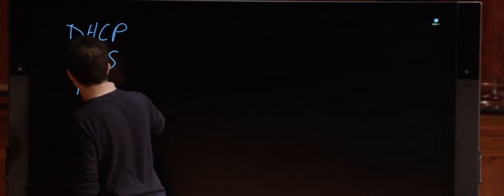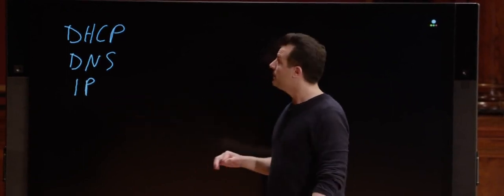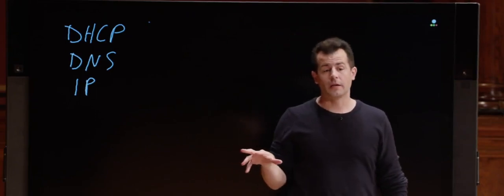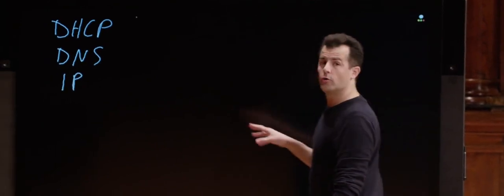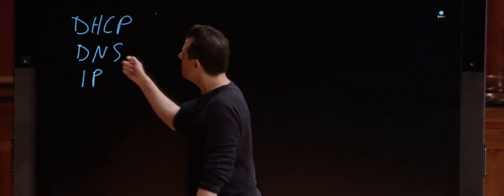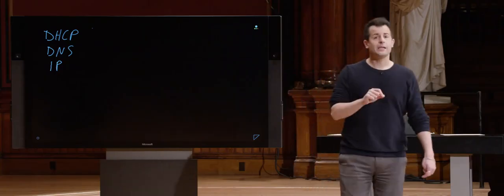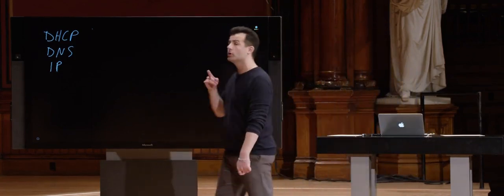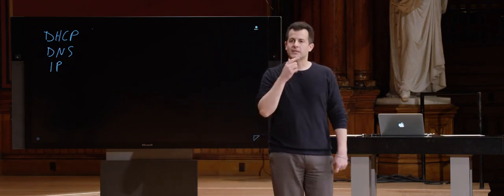To recap: every computer has an IP address, which typically comes from a DHCP server that lives within your ISP or maybe even within your own home. Meanwhile, there are also DNS servers in the world, also controlled by your ISP, that convert domain names to IP addresses, so that when you try to go to facebook.com, your computer - Mac, PC, iPhone, Android, whatever - knows what the actual IP address is.